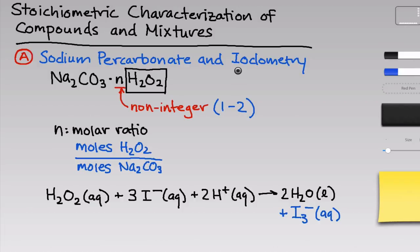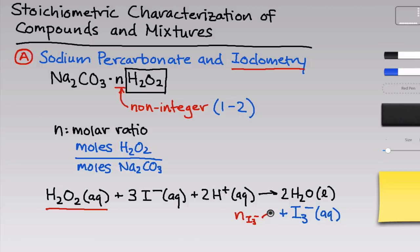The whole idea behind the method of iodometry is to measure the number of moles of an oxidizing agent, such as H2O2, in a solution by studying its reaction with I-. If we know the number of moles of triiodide that formed as a result of reaction with the hydrogen peroxide, we can reason our way back to the number of moles of hydrogen peroxide using a simple molar ratio.